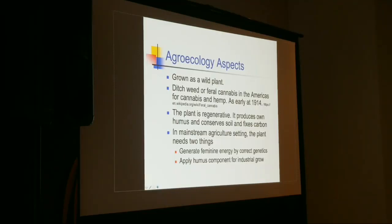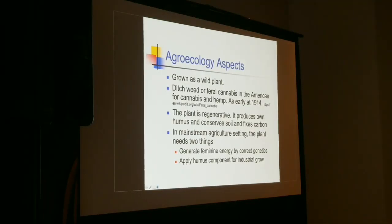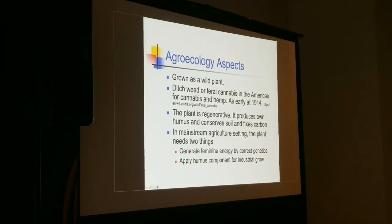I was at ground zero in the war on drugs when I lived in Hawaii — they spent a lot of money looking for cannabis plants in the Hawaiian jungle. But the plant is regenerated. It produces its own humus, conserves soil, fixes carbon. As it grows toward the end of the season, it accumulates nutrients in the bottom leaves, then drops those big bottom leaves, and if not harvested, continues to break down and is converted to humic substances.